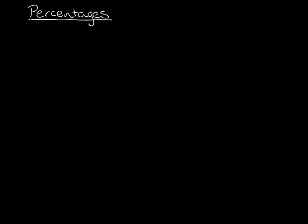In the last section, we were talking about fractions and changing them to percentages. Now what we're going to do is turn decimals into percentages. A decimal number is like this — it's got a zero point, like zero point two three. We don't say it's zero point twenty-three even though that bit looks like twenty-three. We say zero point two three.